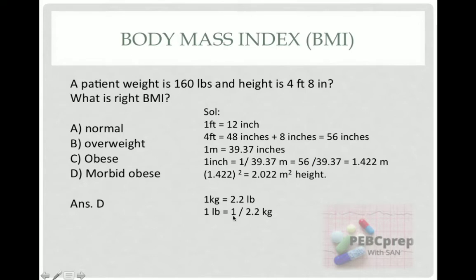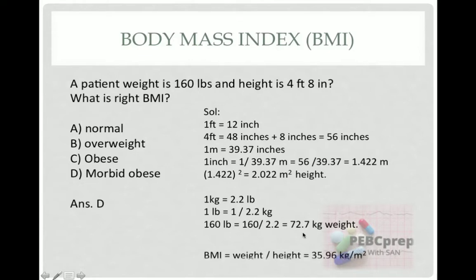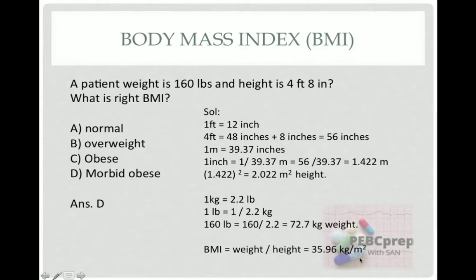Now calculate the weight: 1 kg equals 2.2 pounds, so 1 pound equals 1/2.2 kg. The patient is 160 pounds, so 160 divided by 2.2 gives 72.7 kg. Now put everything into the BMI formula: we get 35.96, which is close to 36 kg/m². So we conclude that the patient is morbid obese.